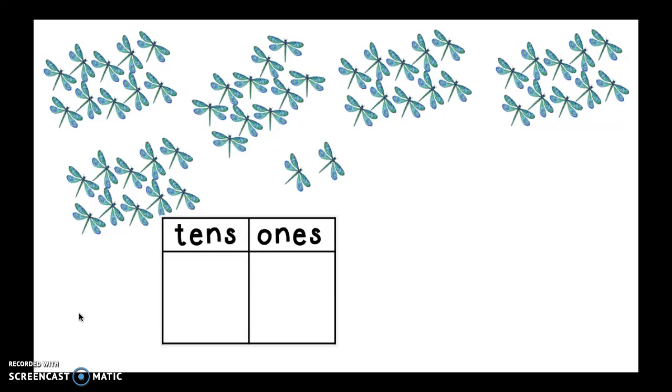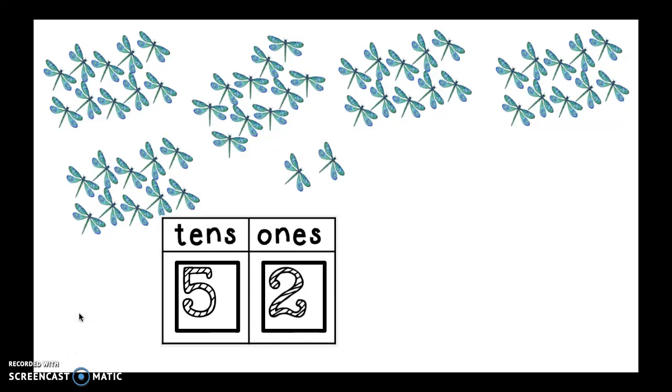Now, I see that there are five groups of tens and two ones. If I was going to say that the say ten way, I would say five tens and two ones. If I was going to write a number sentence, I would say 50 plus two. And then finally, the regular way would be 52.